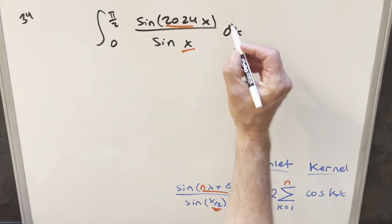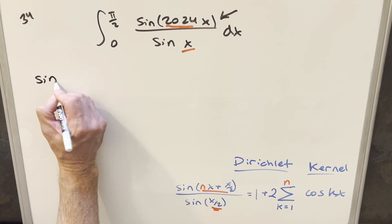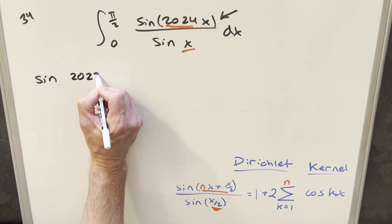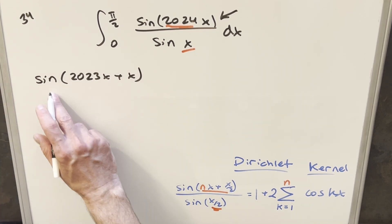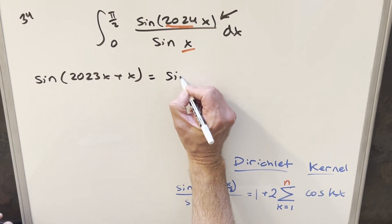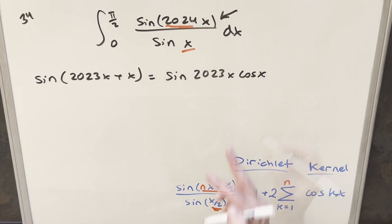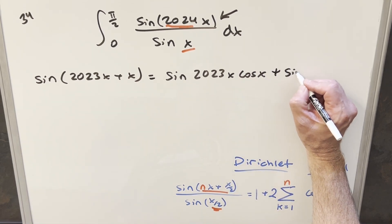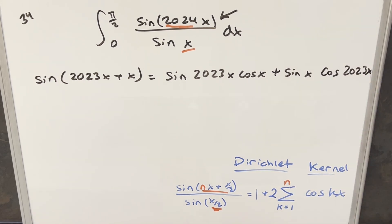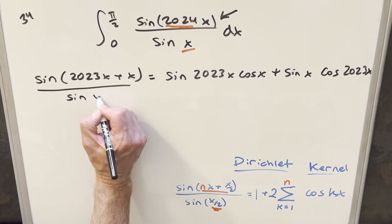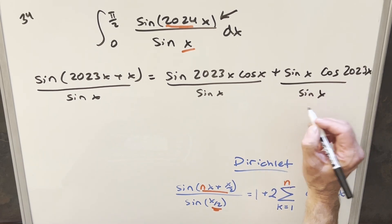So I'm going to start by taking the numerator and seeing if we can manipulate it to get an odd coefficient out of it. For sin(2024x), I can break it up and write it as sin(2023x + x), then use the angle addition formula for sine. Doing that, this becomes sin(2023x)cos(x) plus sin(x)cos(2023x). Then we bring the sin(x) denominator back in, and in the second fraction we get cancellation.